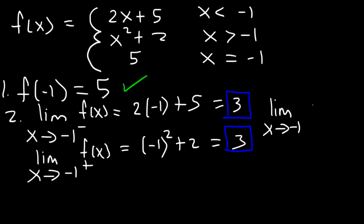Step 3: does the limit as x approaches negative 1 of f of x equal f of a? The limit equals 3, but f of negative 1 equals 5 — these do not match. So the limit as x approaches negative 1 of f of x does not equal f of negative 1. Step 3 has failed, which means it is discontinuous at x equals negative 1, but the limit exists.